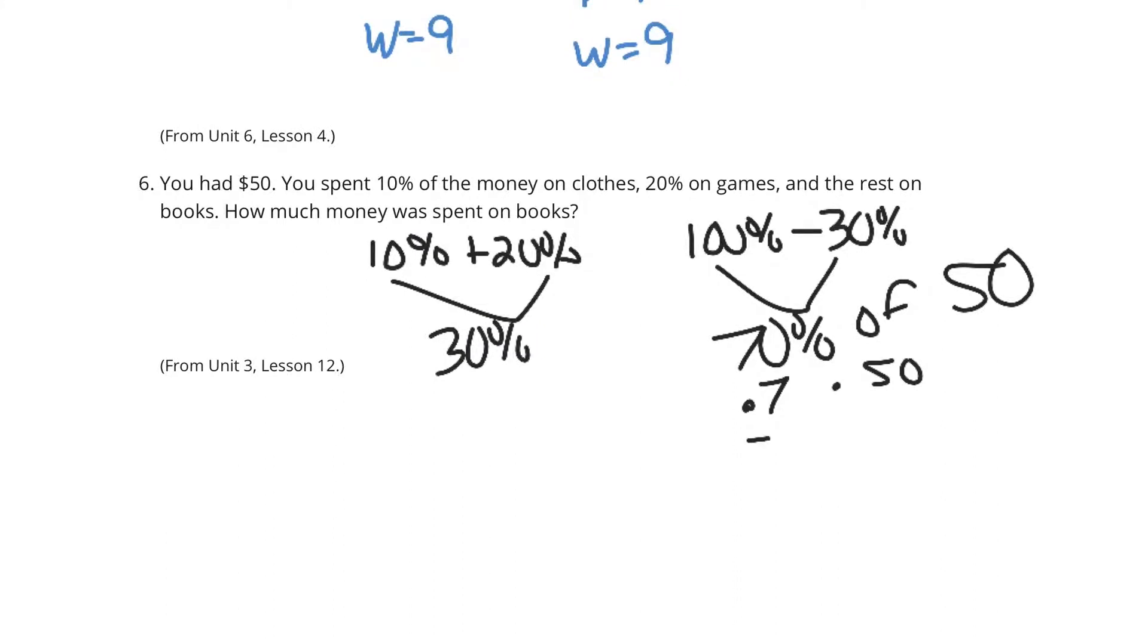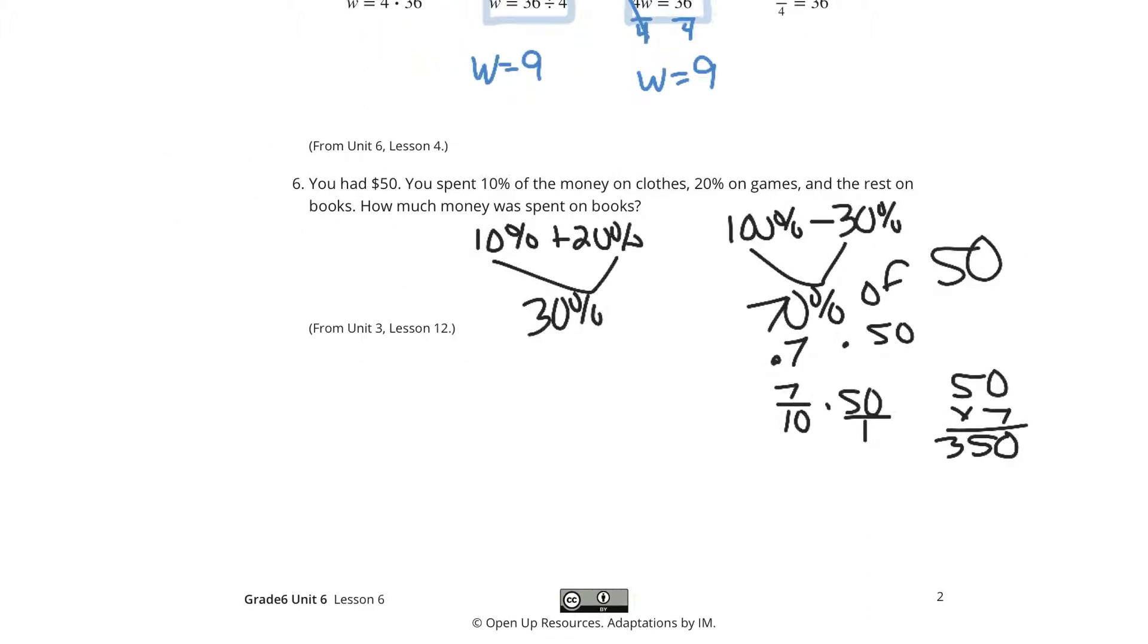Well, this is 7 tenths times 50. And going back to our multiplication here, if we were to take 50 times 7, 7 times 0, 7 times 5 is 350. And we're looking at 350 tenths. And so you have tenths, 0, 5, 3, it's $35.